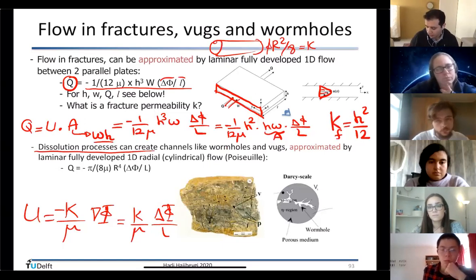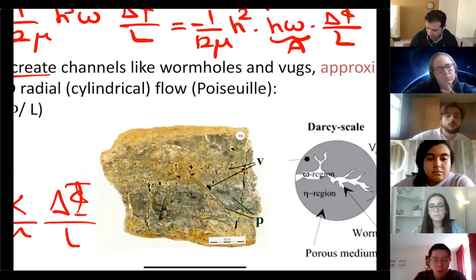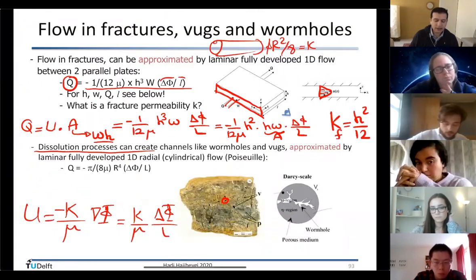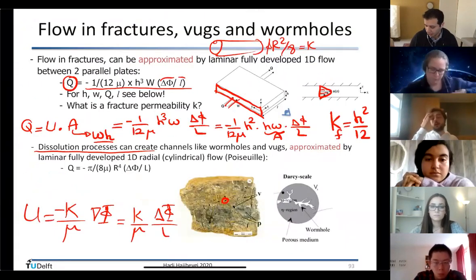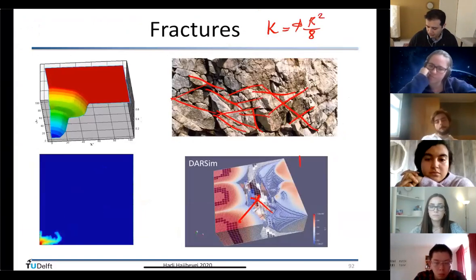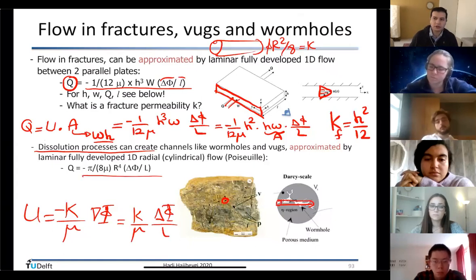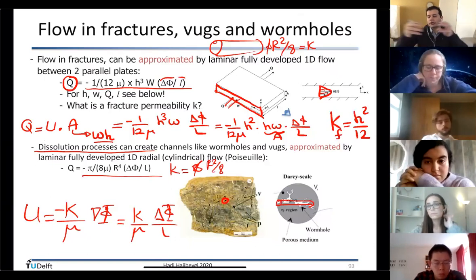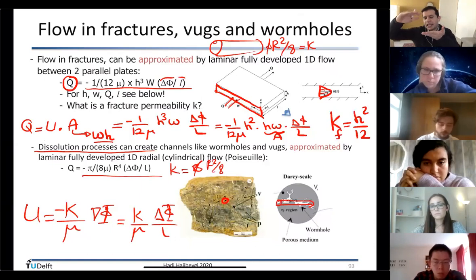Wormholes — visible in some rocks — are like tubes. Their permeability is similar to what we studied: φ·R²/8, and if φ = 1 it becomes R²/8. Summary: circular tube shapes → R²/8; parallel plates (fractures) → h²/12. These are the permeabilities you would use for different geometries.